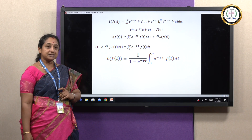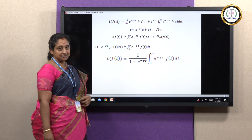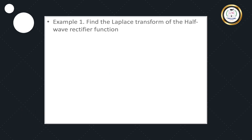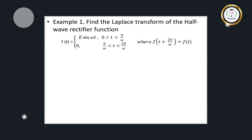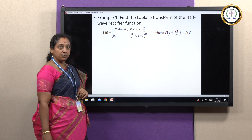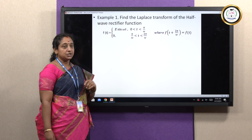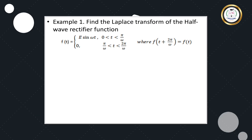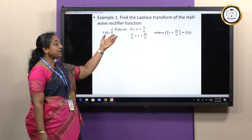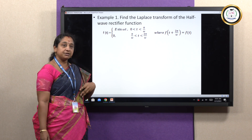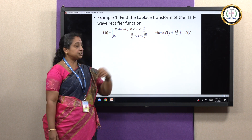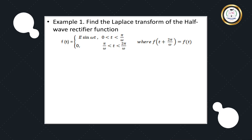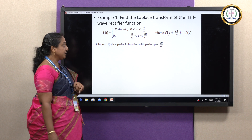We will apply this formula to calculate the Laplace Transform of any periodic function. First, consider the half wave rectifier function: f(t) = E·sin(ωt) for 0 ≤ t ≤ π/ω, and f(t) = 0 for π/ω ≤ t ≤ 2π/ω. Since f(t + 2π/ω) = f(t), the period is p = 2π/ω.